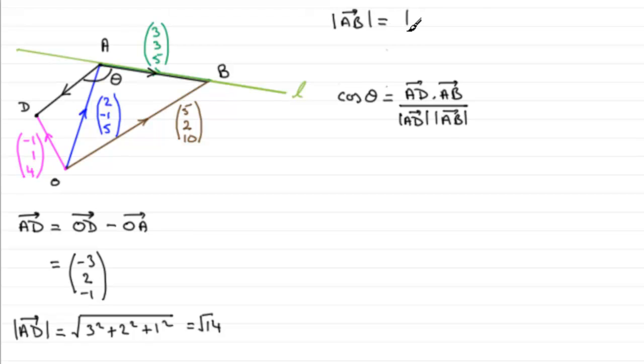And again, all we need to do is do the square root of the sum of the squares of the components. So it would be 3 squared plus 3 squared plus 5 squared. And if we do that, that comes out at the root of 43.